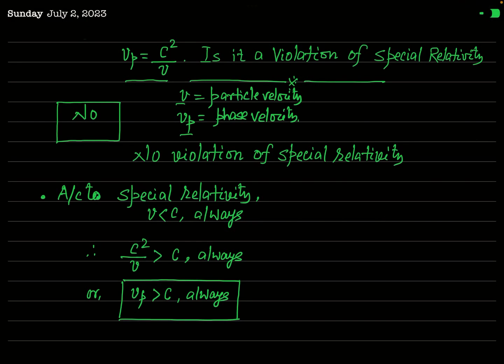While discussing the de Broglie matter wave theory, particularly for deriving the expression for the de Broglie wavelength, we arrive at a very important result. This result is written as vp = c²/v, where v is interpreted as particle velocity and vp is called the phase velocity of the matter wave.